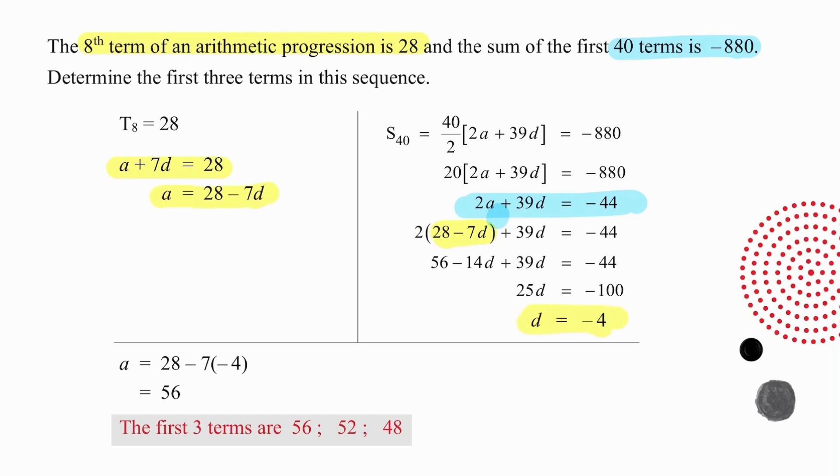So we now have only one unknown, and careful algebra will get you a result of D equal to minus 4. You take that back to the formula that you used earlier, you made A the subject, now you substitute the minus 4 which you worked out for D, and with that you can work out that A is equal to 56. So starting with 56 as the first term, add a difference, which happens to be negative, so the terms are dropping in value, and add a difference again, and your first three terms are 56, 52, and 48.